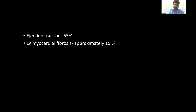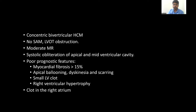Short axis view at basal level shows patchy mid-myocardial enhancement and RV insertion point enhancement. Ejection fraction was calculated to be 55%, which is above 50%. LV myocardial fibrosis was approximately 15%, calculated using software and the LGE images. 15% is significant.